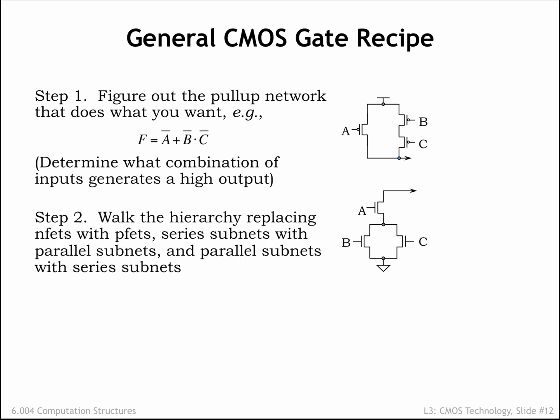To build the complementary pull-down circuit, systematically walk the hierarchy of pull-up connections, replacing PFETs with NFETs, series sub-circuits with parallel sub-circuits, and parallel sub-circuits with series sub-circuits. In the example shown, the pull-up circuit had a switch controlled by A in parallel with a series sub-circuit consisting of switches controlled by B and C.